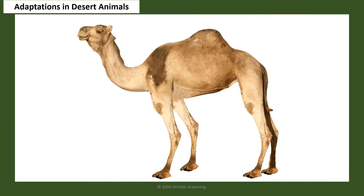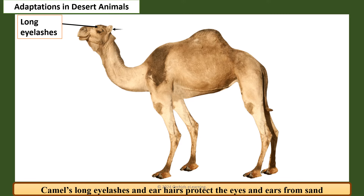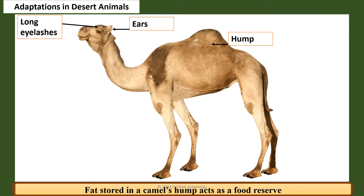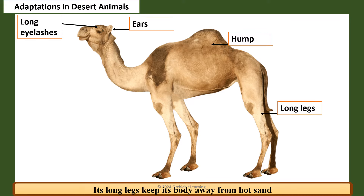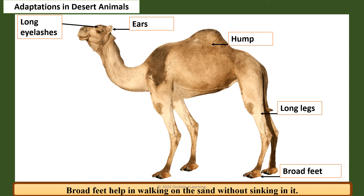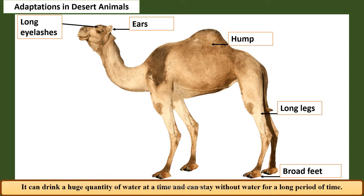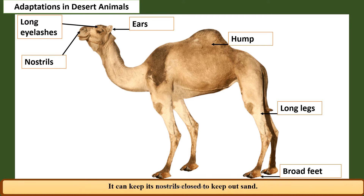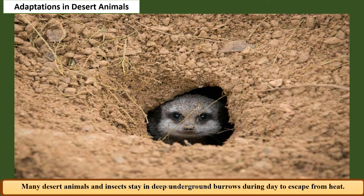Camels have several desert adaptations: long eyelashes and ear hairs protect the eyes and ears from sand; fat stored in the hump acts as a food reserve; long legs keep the body away from hot sand; broad feet help in walking on sand without sinking. Camels can drink a huge quantity of water at a time and can stay without water for a long period. They can keep their nostrils closed to keep out sand. Many desert animals and insects stay in deep underground burrows during the day to escape from the heat.